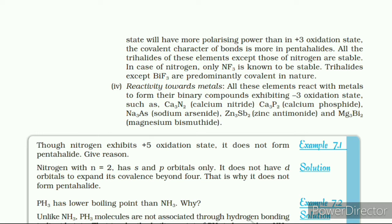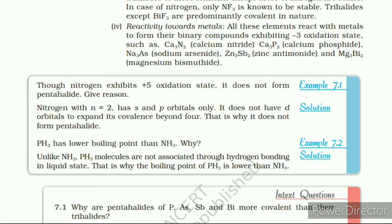Dinitrogen is inert at room temperature because of the high bond enthalpy of the N≡N bond; however, reactivity increases rapidly with rise in temperature. At higher temperatures it directly combines with some metals to form predominantly ionic nitrides and with non-metals to form covalent nitrides. Typical reactions: 6Li + N₂ → 2Li₃N; 3Mg + N₂ → Mg₃N₂. It combines with hydrogen at about 773 K in the presence of a catalyst by Haber's process to form ammonia: N₂ + 3H₂ → 2NH₃.